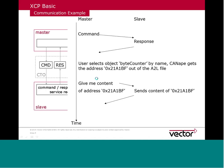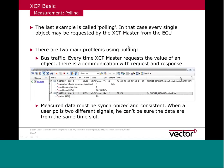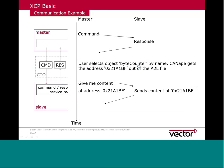Here is a communication example. The master sends a command and the slave sends a response — shown on a time axis. For example, the user selects an object by name — in this example 'byteCounter'. The master looks up the address of this object in the A2L file, sends the command 'give me the content of this address' to the slave, and the slave answers with the content. This is an example of polling.